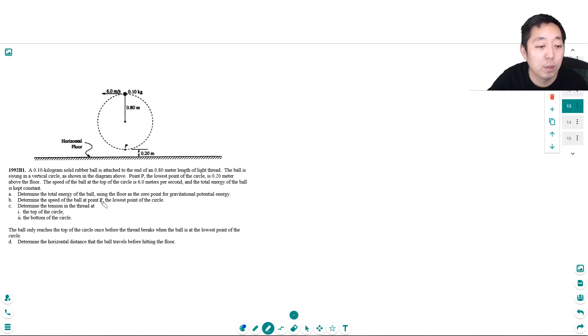Determine the total energy of the ball using the floor as a zero point for gravitational potential energy. Okay, so up here I know its velocity and its height so I will do the energy there. So its total energy is whatever its potential energy is plus its kinetic energy. That's Mgh plus one half mv squared.